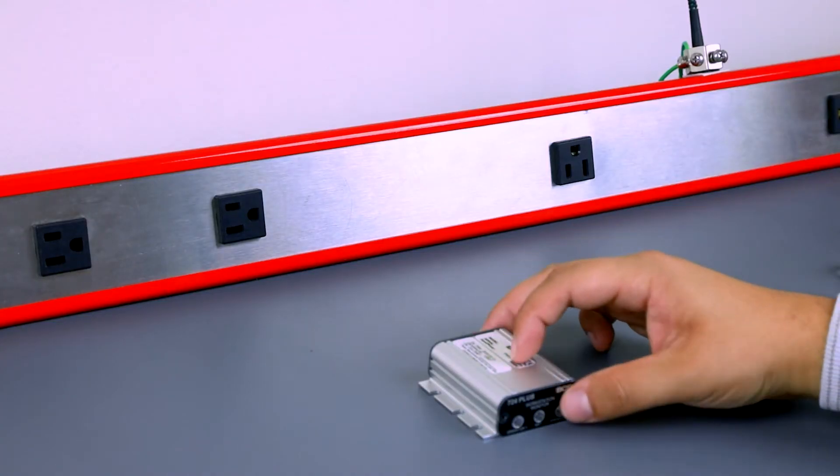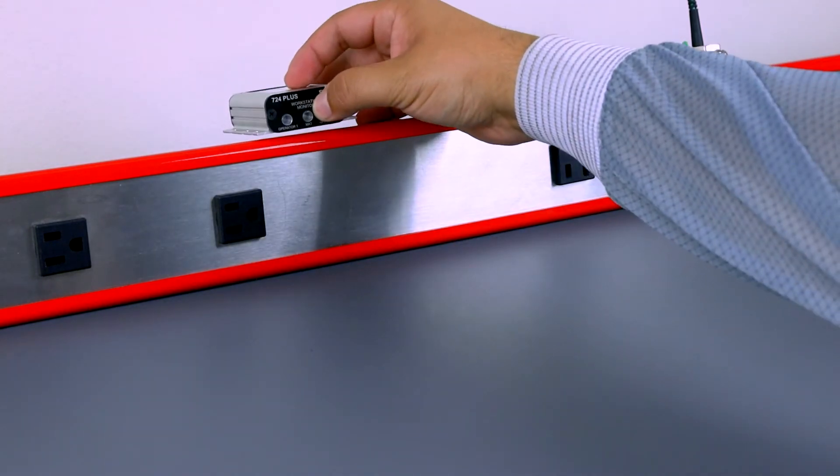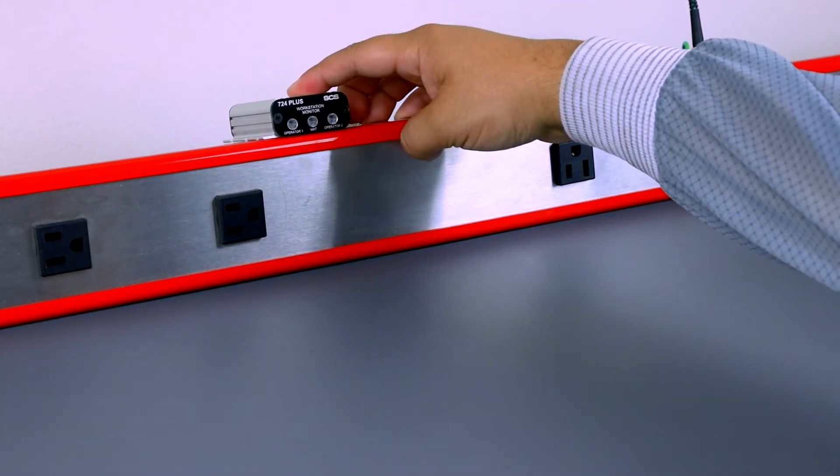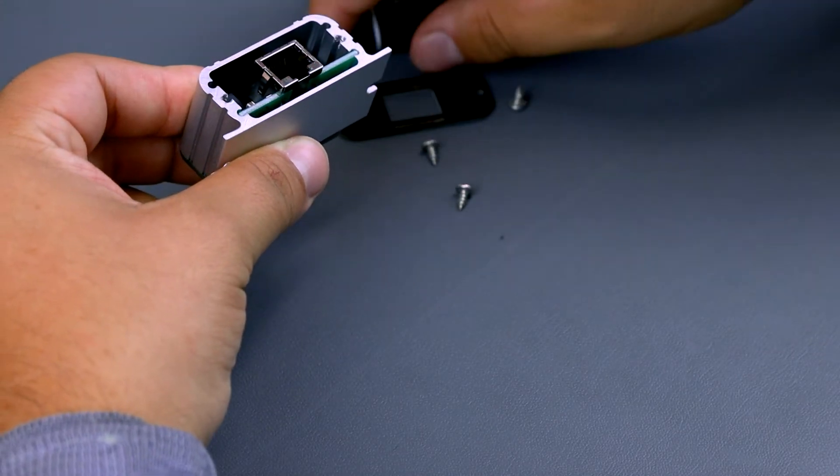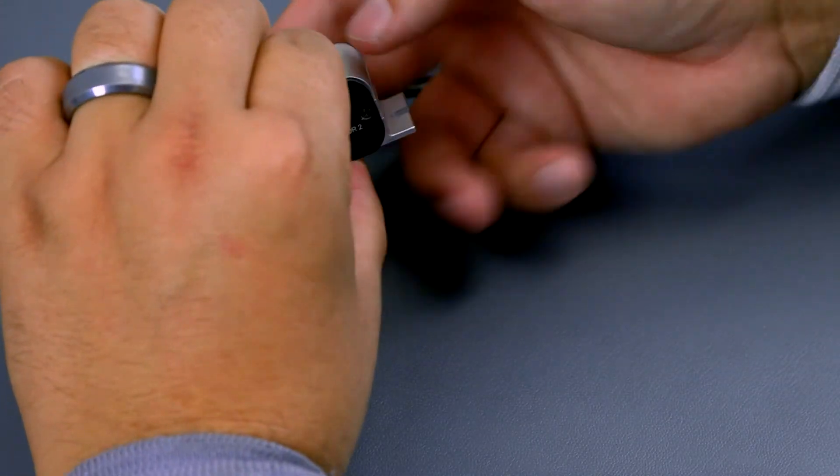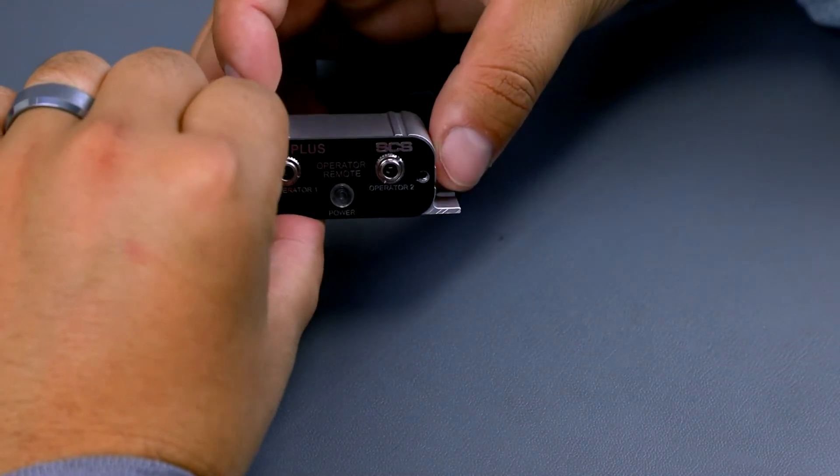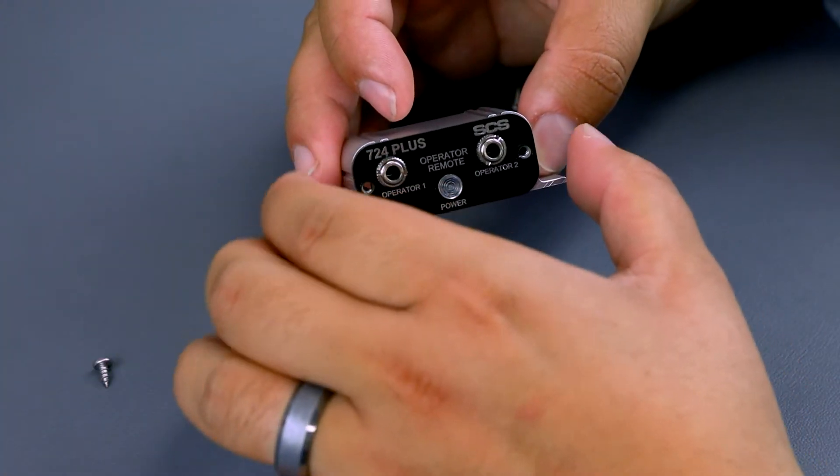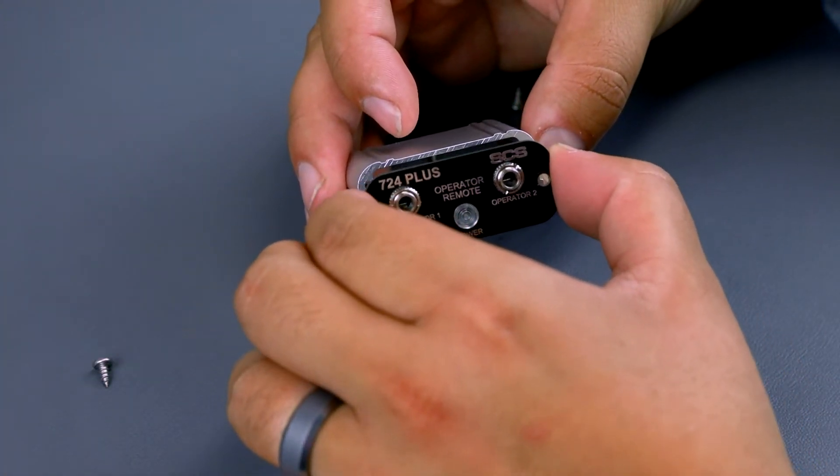Determine where on the bench you will be mounting the 724 Plus Monitor. It should be placed in a spot that will always be visible to the operator. You will also need to determine the mounting location of the dual operator remote. The jacks need to be accessible to the operator. Locate this remote within reach of the included gray remote cable.